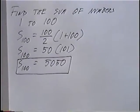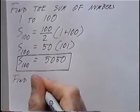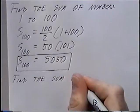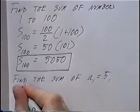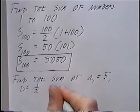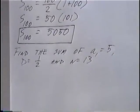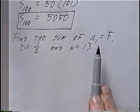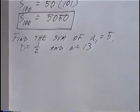The next and last question for this section: we will find the sum where a sub 1, the first term, is 5, the common difference d is one-half, and the number of terms n is 13. Looking at what we're given — a sub 1, the difference, and n — we'll be using the second formula.